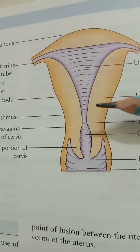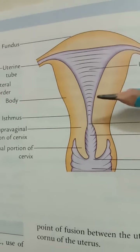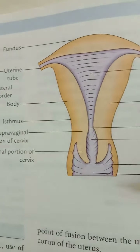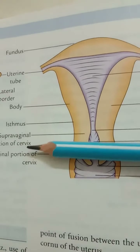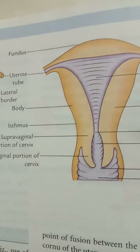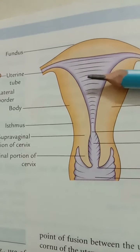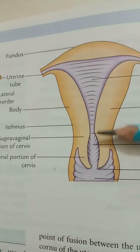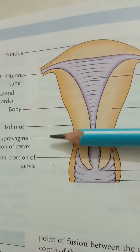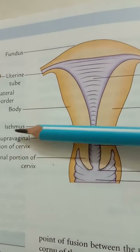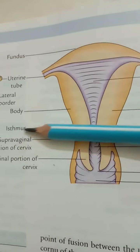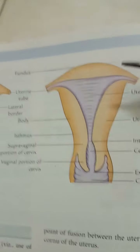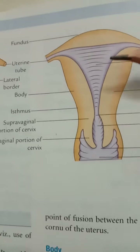The uterus is divided into the upper two-thirds, called the body, and the lower one-third, called the cervix. The junction where the body and cervix join each other is called the isthmus.